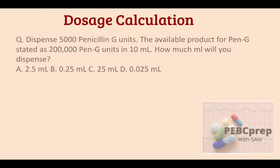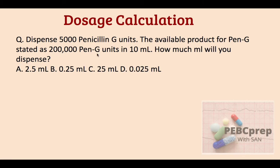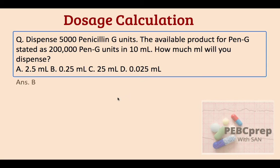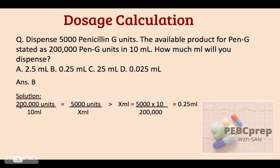Next question: dispense 5,000 penicillin G units. The available product is stated as 200,000 penicillin G units in 10 ml. How many milliliters will you dispense? Options: a) 2.5 ml, b) 0.25 ml, c) 25 ml, d) 0.025 ml. The answer is b, 0.25 ml. Solution: (5,000 ÷ 200,000) × 10 ml = 0.25 ml.